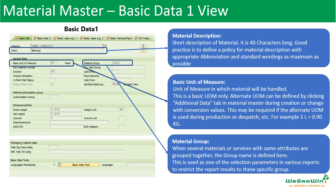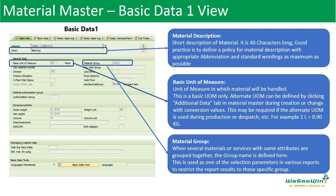Material group is used when we have different materials or services with the same attributes — they can be grouped together and defined here. This is used as one of the selection parameters in various reports to restrict results to a specific group. Division is also here. Division is used to distinguish different types of distribution channels. Each material can be assigned to only one division — please be clear about that. Primarily, this is defined at the SD organization level, and it allows a company to organize the sales structure to work with groups of similar materials.